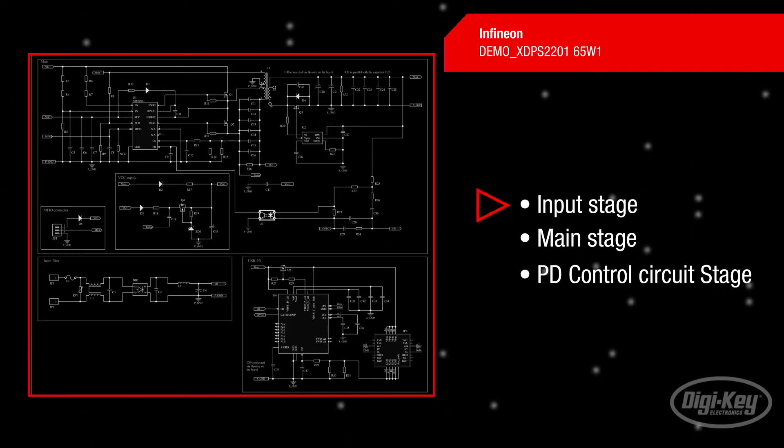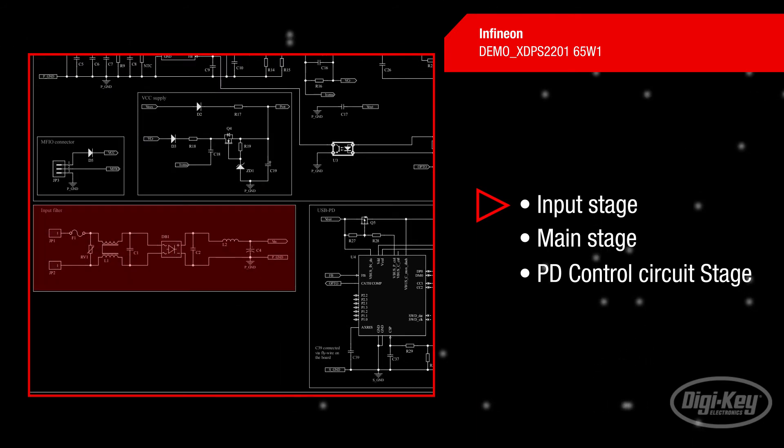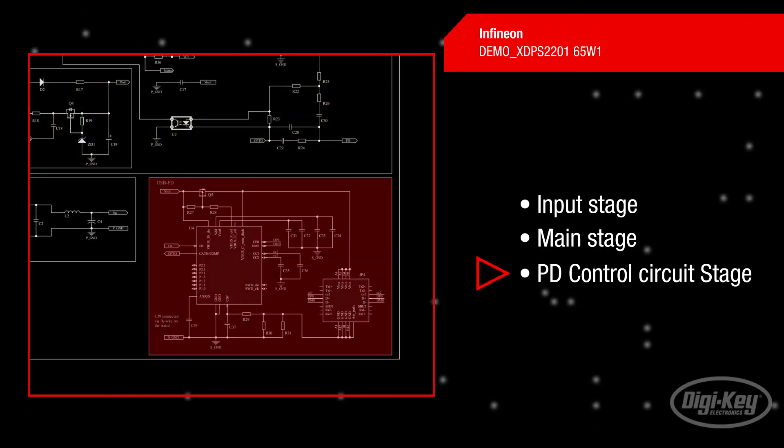The circuit consists of three main portions: the input stage, main stage, and PD control circuit stage.